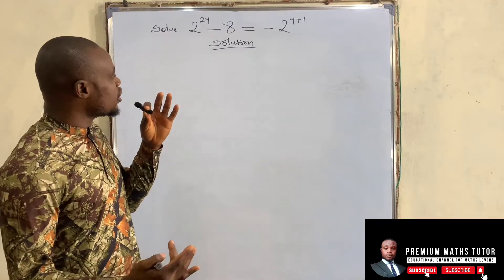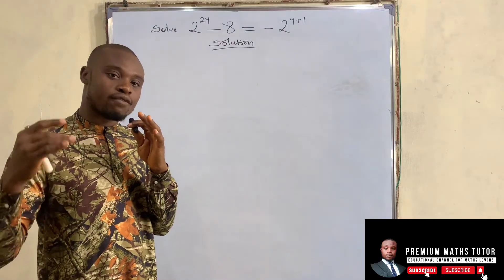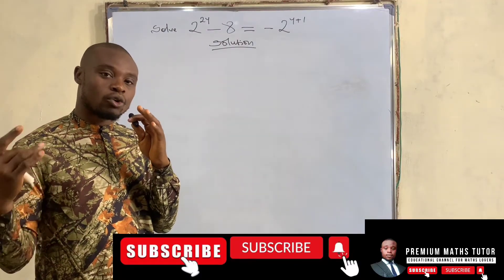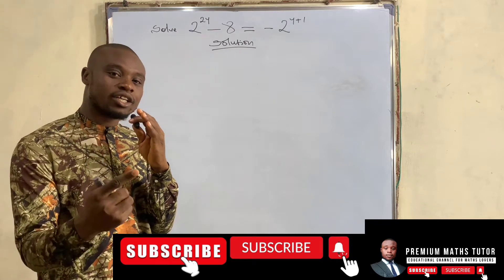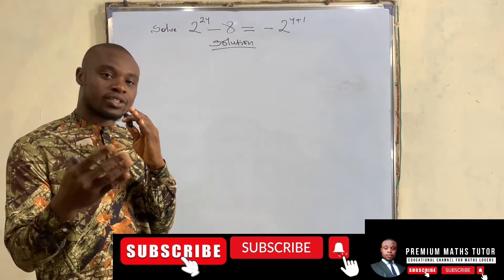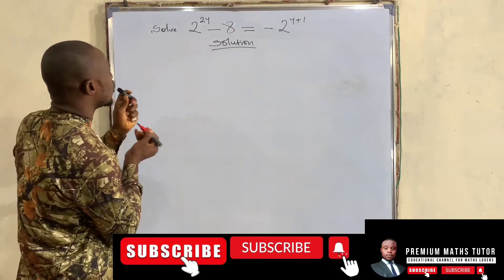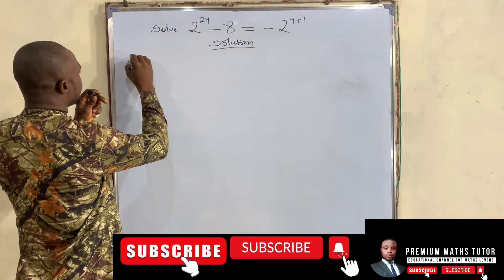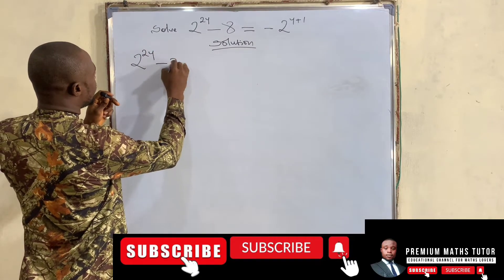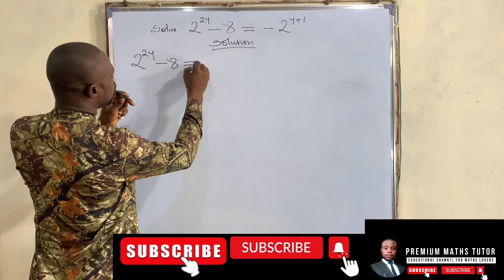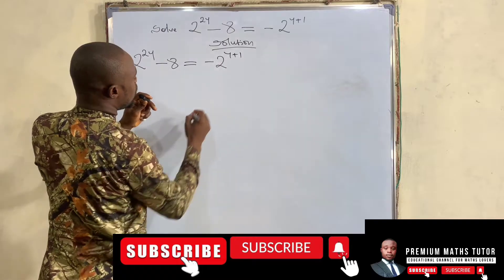The question is to solve this — basically find the exact value of y. So let's get to it. This is 2 to the power of 2y minus 8 equals minus 2 to the power of y plus 1.